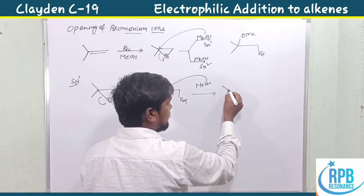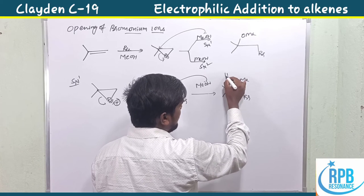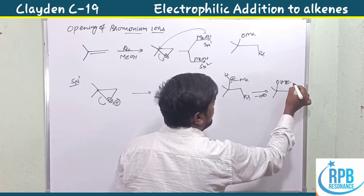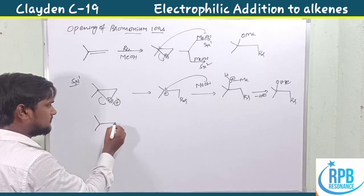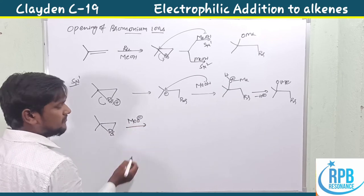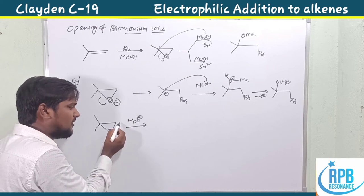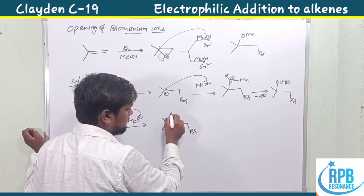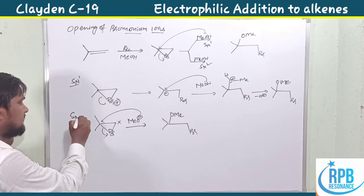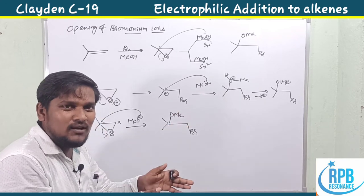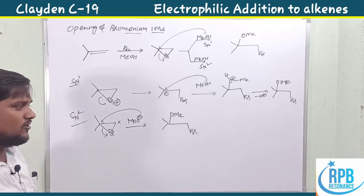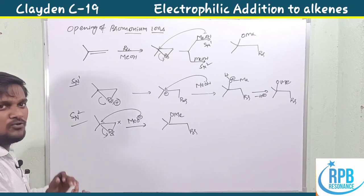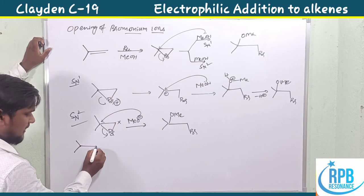The nucleophile attacks the electrophilic center — methanol (OCH3·H) attacks, loses H+, and creates the SN1-type product. In the SN2 manner, methoxide in methanol cannot attack the sterically less crowded side — it attacks the sterically more crowded side — giving the same kind of product. Both the SN1 and SN2 mechanisms are imagined pathways; originally the bromonium ion opening follows another mechanism that lies between SN1 and SN2.